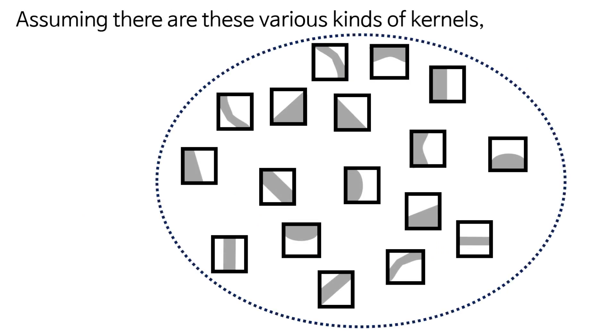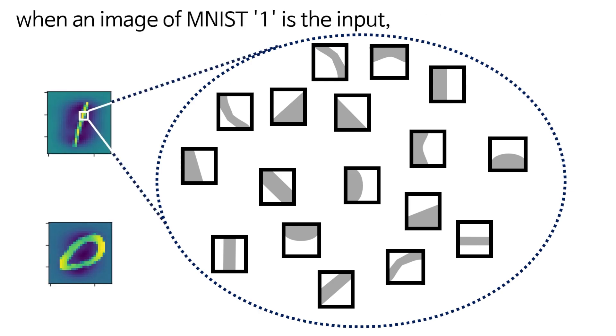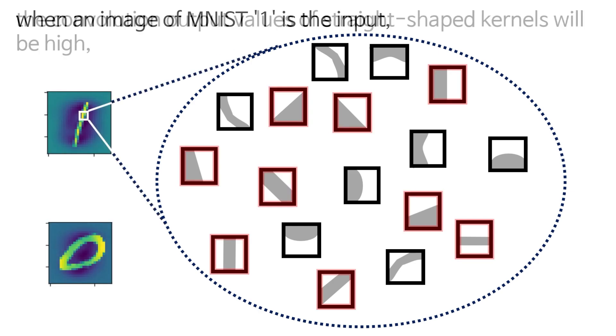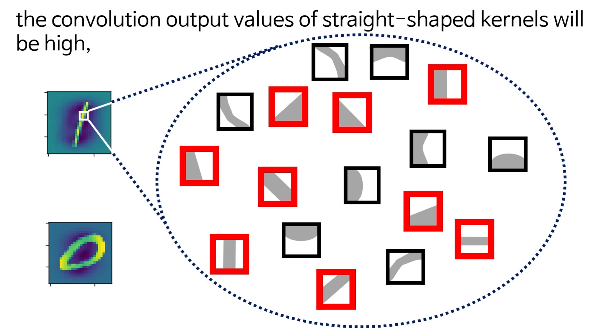If we think more broadly, assuming there are various kinds of kernels, when an image of MNIST 1 is input, the convolution output values of straight-shaped kernels will be high.